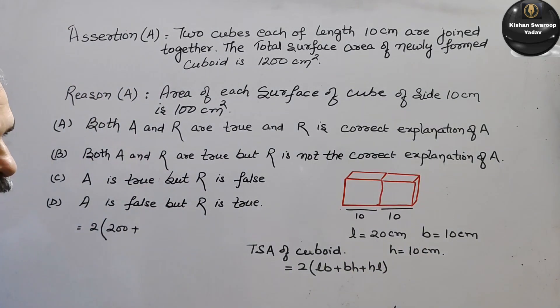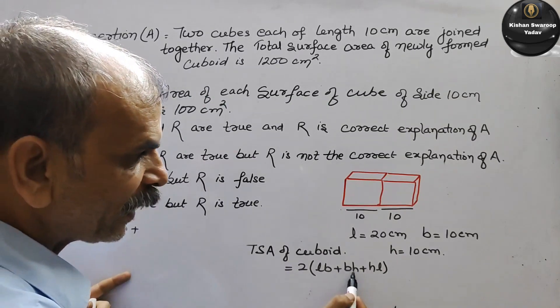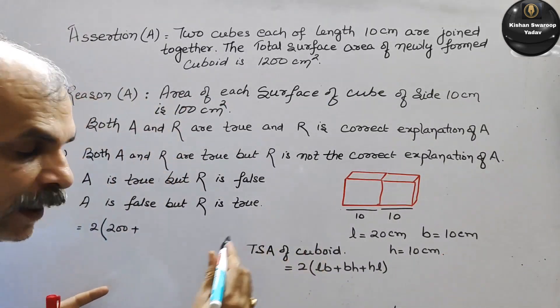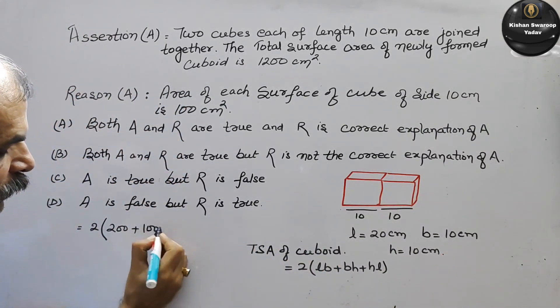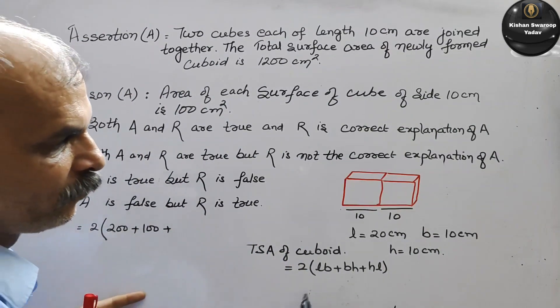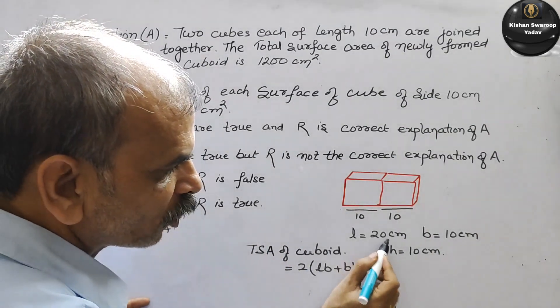Plus next, BH is 10 into 10 which is 100, plus HL.